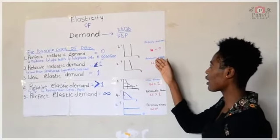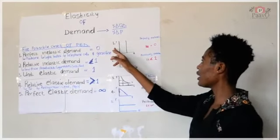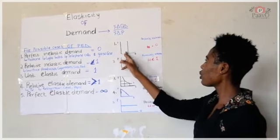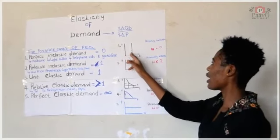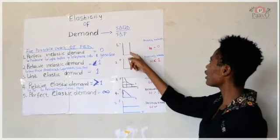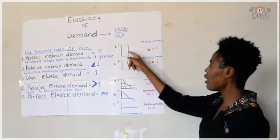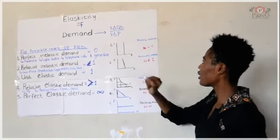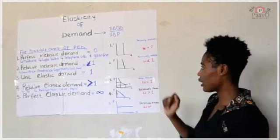Just to compare the cases, you can look at the graphs here. This is the price, and if the price chooses to go up, still the demand will stay the same — the demand stays the same.